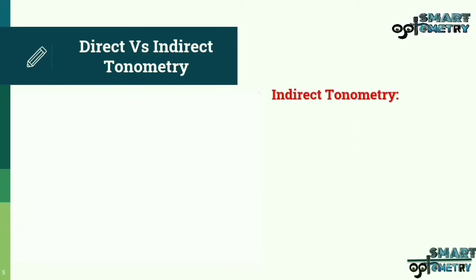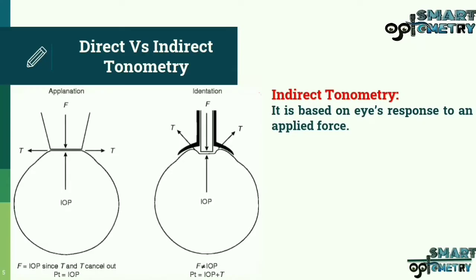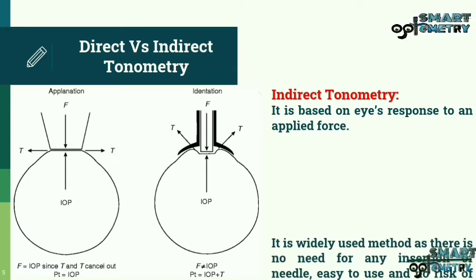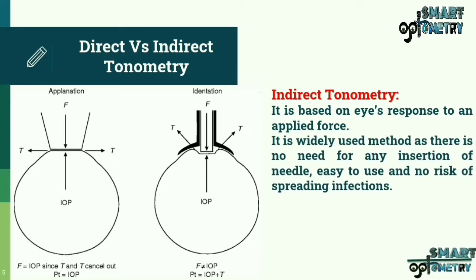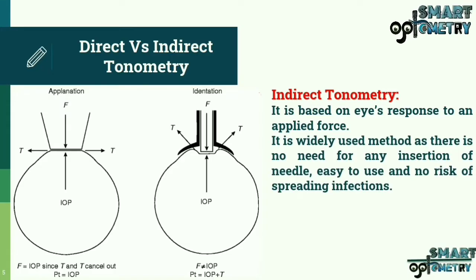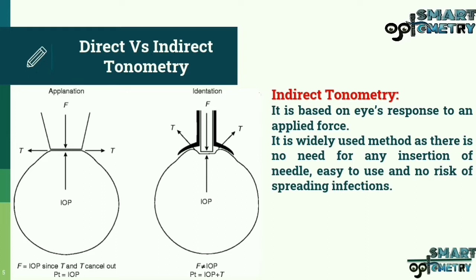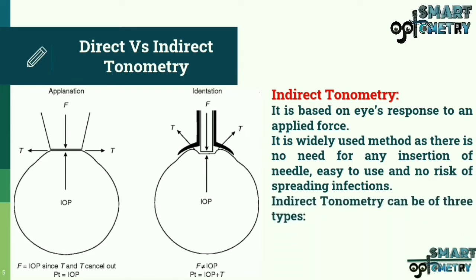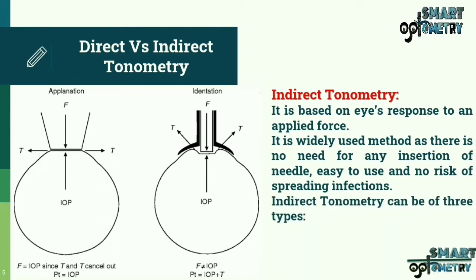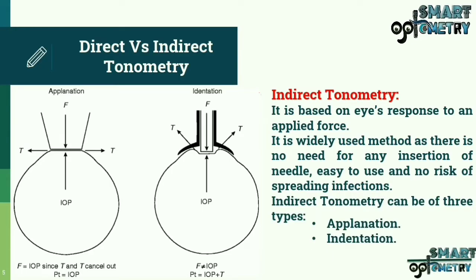Indirect tonometry is based on the eye's response to an applied force. It is widely used as there is no need for needle insertion, it is easy to use, and there is no risk of spreading infections. Indirect tonometry can be of three types: aplanation, indentation, and palpation.